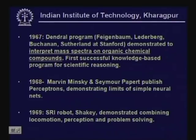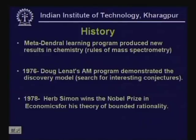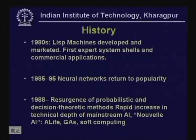In 1969, the robot Shakey developed at SRI in Stanford demonstrated locomotion, perception, and problem solving. From 1969 to 1979, knowledge-based systems were developed. In 1976, Doug Lenat had a program demonstrating the discovery model. In 1978, Herbert Simon from CMU won the Nobel Prize in Economics for his theory of bounded rationality. In the 1980s, Lisp machines were developed and marketed. From 1985 to 1995, neural networks returned to popularity. In 1988, there was a resurgence of probabilistic and decision theoretic methods.